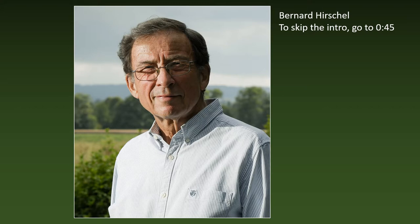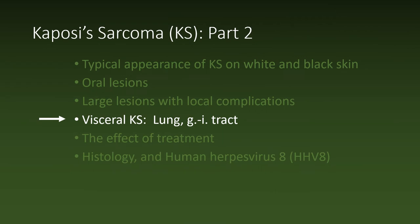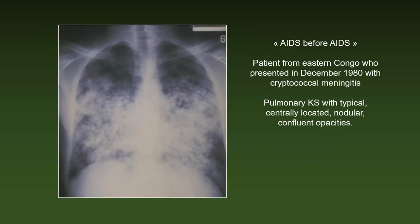After a short introduction, they will show a series of images illustrating one or several exemplary cases from my files. Visceral KS involves mostly the lung and the GI tract. A rare example of probable AIDS before the disease was officially recognized in May of 1981: the patient was from Eastern Congo and presented in December 1980 with cryptococcal meningitis. What we see here is pulmonary KS with typical centrally located nodular confluent opacities. The disease was only diagnosed at autopsy.